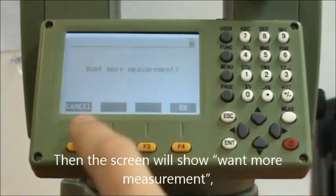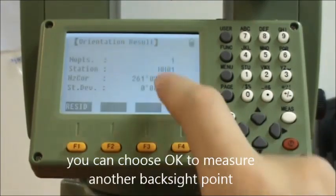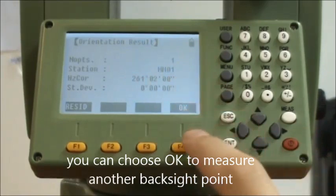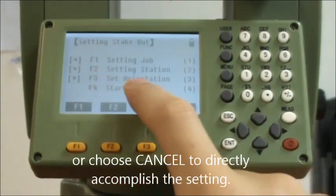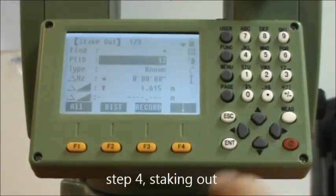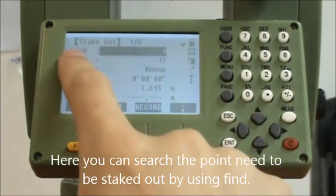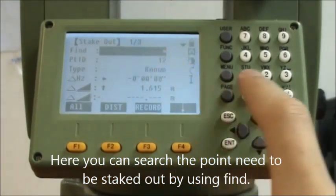The screen will show one more measurement. You can choose okay to measure another backside point or choose cancel to directly accomplish the setting. Step number four, stakeout. Here you can search the point need to be staked out by using find.